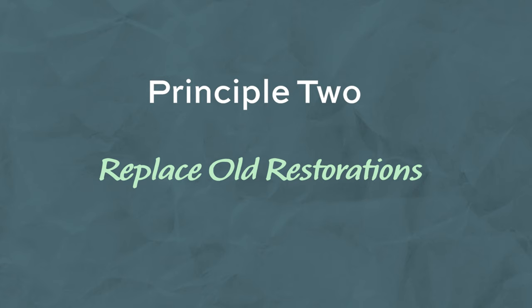The second principle is about replacing the old restoration before carrying out your root canal treatment. If someone presents with a previous restoration — an MO composite or amalgam, or a previous crown — and there's a need to root canal treat the tooth, you should remove the previous restoration even if it looks clinically and radiographically sound. The reason for this is there is a 65% chance that there is secondary caries present underneath. So you should remove the old restoration or crown instead of accessing through it.